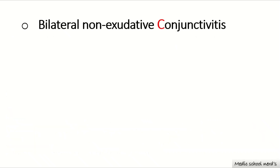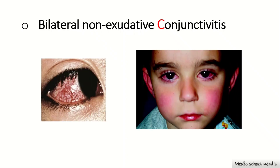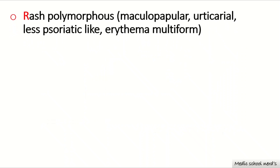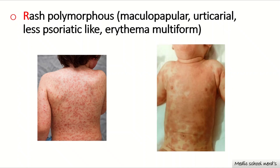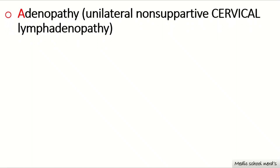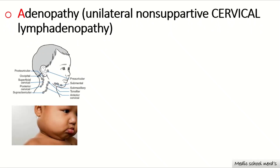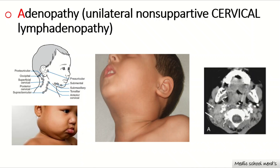Bilateral non-exudative conjunctivitis occurs due to dilatation of the blood vessels of the eye. The rash over the body is polymorphous and can be maculopapular, urticarial, psoriatic type, or erythema multiforme — caused by vascular endothelium damage, circulating toxins, and immunoglobulin reactions. Cervical adenopathy is due to increased inflammatory cells within the lymph nodes.